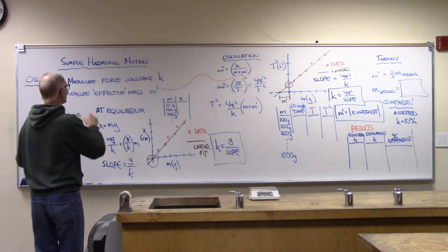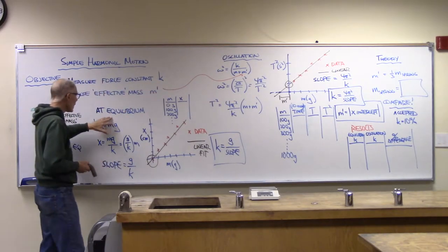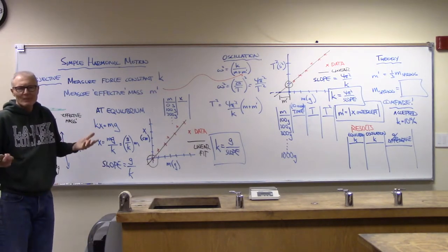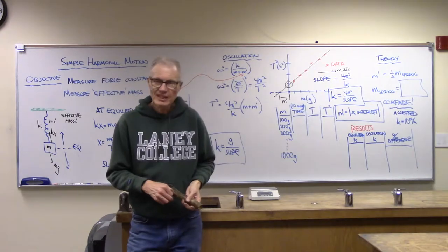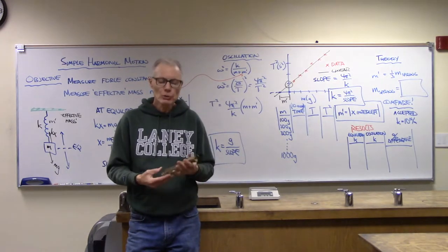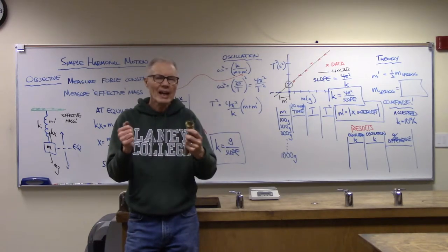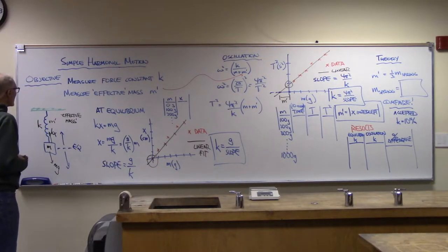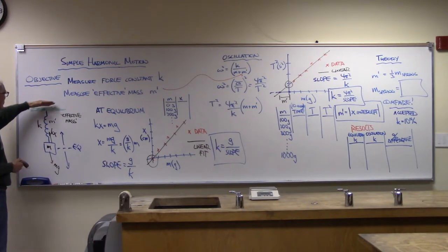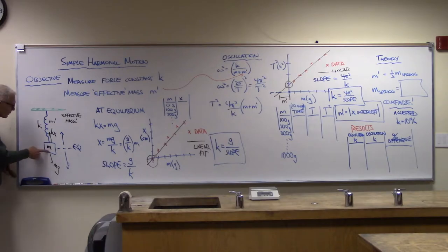In addition to using oscillatory measurements to find a value of k, we can also use the equilibrium method — that's even easier. We've been looking at springs since chapter seven, using them to represent elastic properties of materials. For the equilibrium method: here's a support, here's the spring attached, and here is some mass. What we do is find where the equilibrium is.